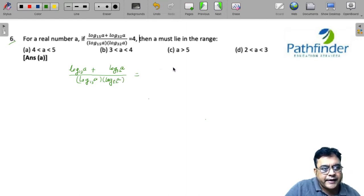Now, we can write this as 1 upon - if you separate the fractions, you can cancel out - 1 upon log of a to the base 32 plus 1 upon log of a to the base 15.